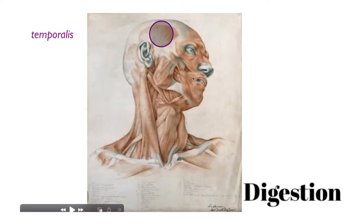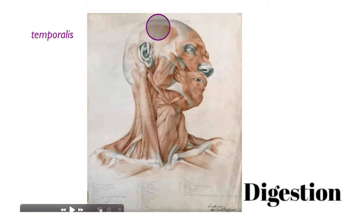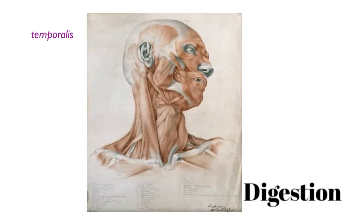The temporalis muscle attaches superiorly to the temporal lines on the parietal bone. If you've studied the bones of the skull, it may be confusing to see that the temporal lines are on the parietal bone and not on the temporal bone — they are called the temporal lines because the temporalis muscle attaches to that specific region. If you watch someone with a shaved head chewing, you can often see the temporalis muscle contracting.